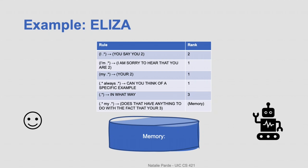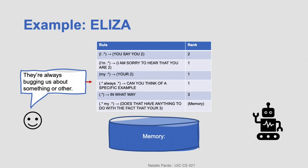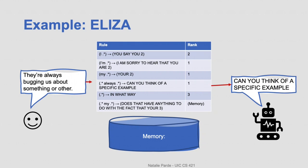We carry on, and the user elaborates a bit more. We feed this new input to the system, and it matches a pattern searching for the word 'always' in the text. This pattern is highly ranked, so it supersedes the more general pattern matched previously, and we output 'can you think of a specific example?'